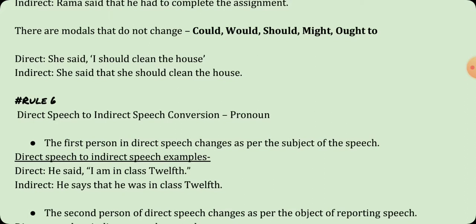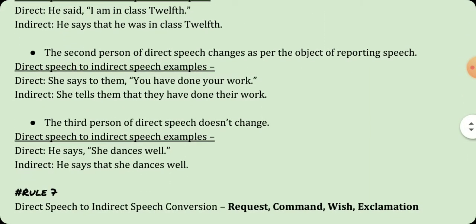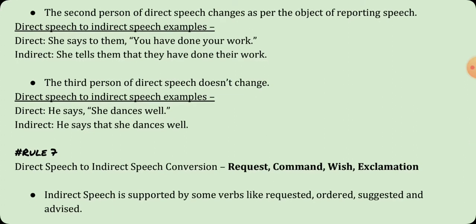The sixth rule is about pronouns. The first person in direct speech changes as per the subject of the speech. For example, 'He said I am in class 12th' becomes 'he said that he was in class 12th.' The second person of direct speech changes as per the object of the reporting speech. For example, 'She says to them you have done your work' becomes 'she tells them that they have done their work.' The third person of direct speech doesn't change. For example, 'He says she dances well' becomes 'he says that she dances well.'